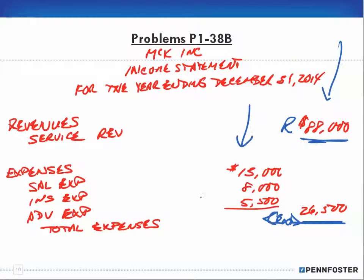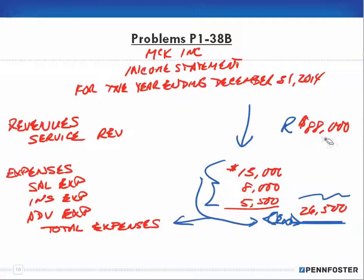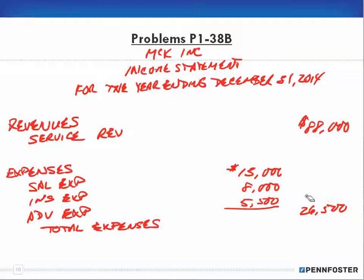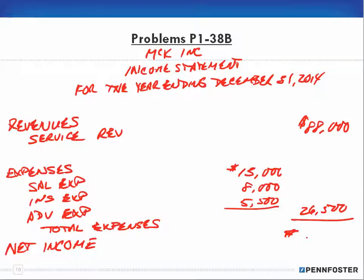The total expense of twenty-six thousand five hundred goes in the right-hand column. Looking at that column, I can see revenues at eighty-eight thousand and total expenses at twenty-six thousand five hundred. That gives me a net income of sixty-one thousand five hundred dollars. Since this is the end of a calculation, I put a dollar sign and a double underline — and there's my income statement.